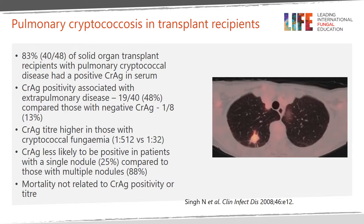How about cryptococcal infection in non-HIV-infected patients? In this study of solid organ transplant recipients, 83% of those with pulmonary cryptococcal disease had a positive serum CRAG test. Overall, 48% of these patients with a positive cryptococcal antigen had extrapulmonary disease, compared to 13% of those with a negative CRAG test. CRAG titer was significantly higher in fungemic compared to non-fungemic patients with pulmonary cryptococcosis. CRAG was less likely to be positive in those with a single pulmonary nodule compared to those with multiple pulmonary nodules. Mortality at 90 days did not correlate with serum cryptococcal antigen positivity.